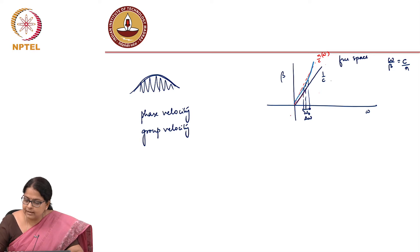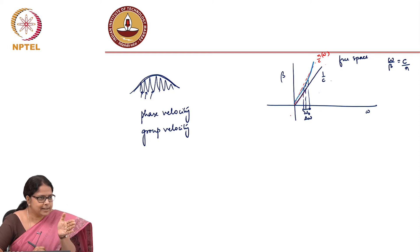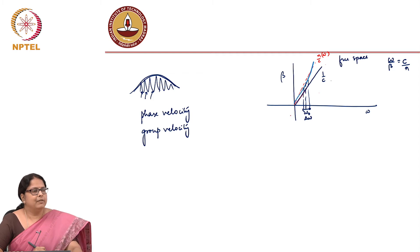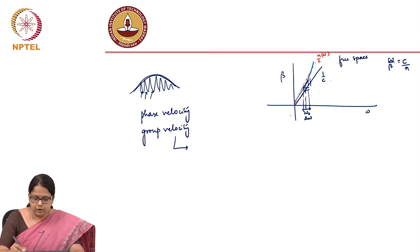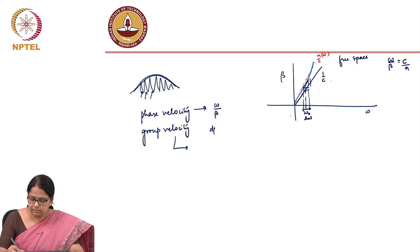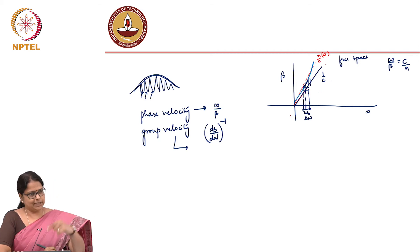Phase velocity tells you the speed with which wave fronts of constant phase propagate — that does not matter here anymore. When you have a pulse with a certain spectral spread, what matters is the slope: delta omega by delta beta. So phase velocity is omega by beta, and group velocity is the inverse of d beta by d omega, i.e., d omega by d beta.